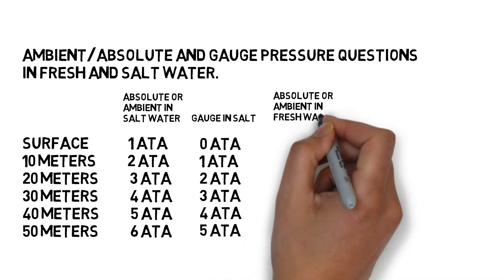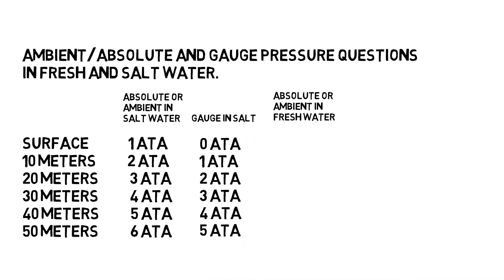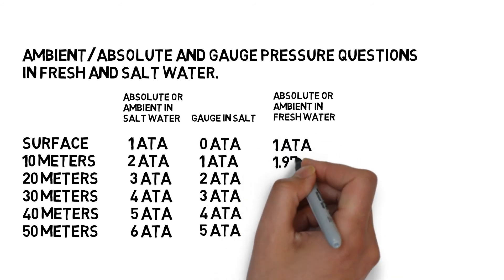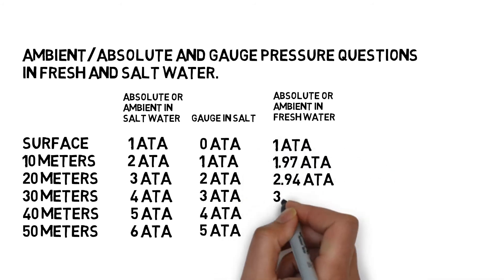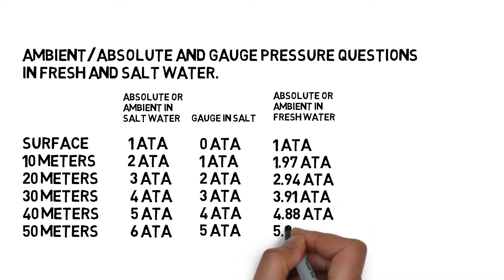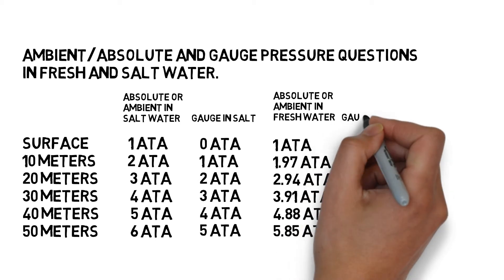To find the ambient or absolute pressure in freshwater, I just did a previous video on that one. What we do is we take the ambient or absolute pressure in salt water, we subtract one, we divide by 1.03, and we add the one back in. Why are we subtracting that one and adding it back in?